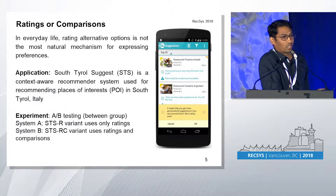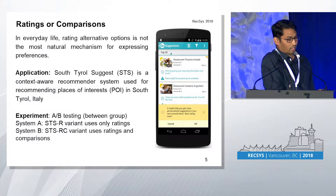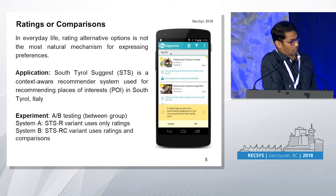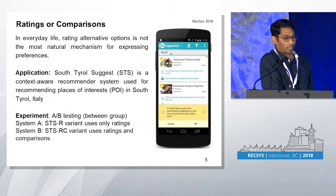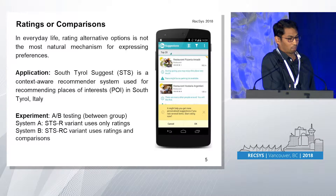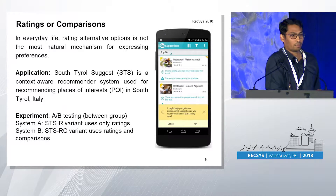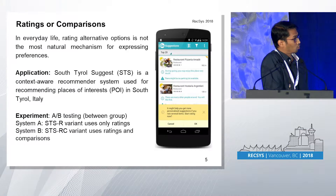Using this app, we developed two variants. The first is the rating variant STSR, which uses only ratings. The second is STSRC, which uses both ratings and comparisons. Using these systems, we performed online A/B testing to validate our research hypotheses.